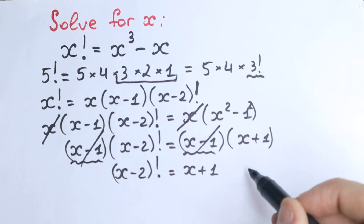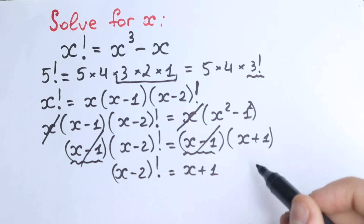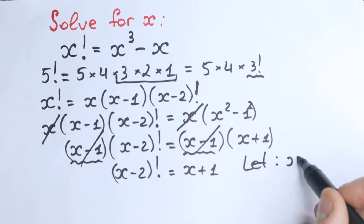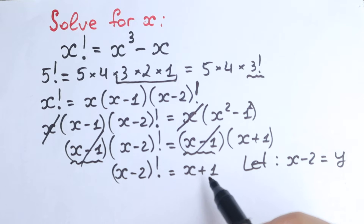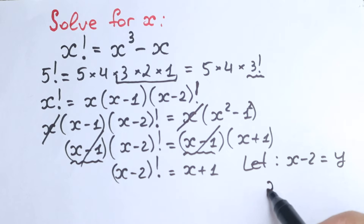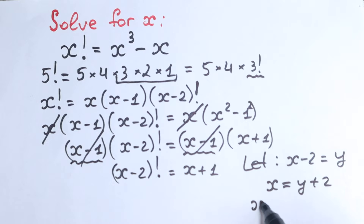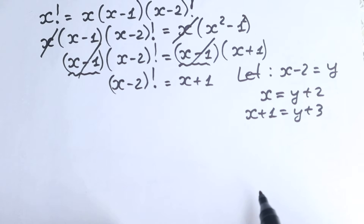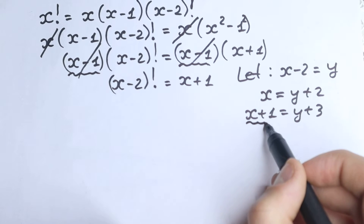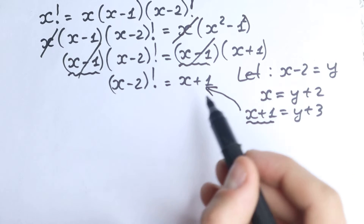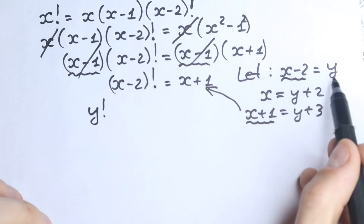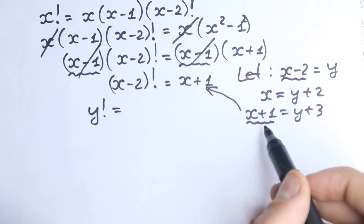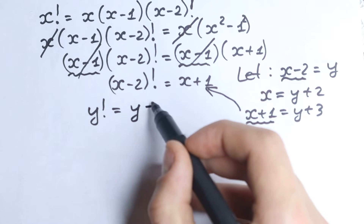Now I want to show you a really interesting substitution. We don't want x minus 2 factorial — we want to simplify things. Let's write a substitution where x minus 2 equals y. Then x equals y plus 2, and therefore x plus 1 equals y plus 3. So substituting, we have y factorial equal to y plus 3.